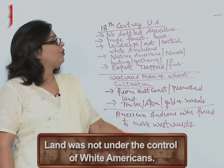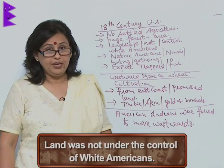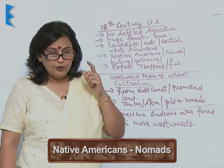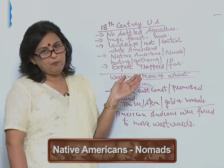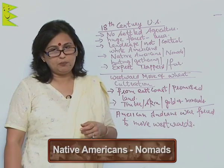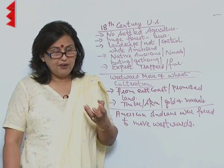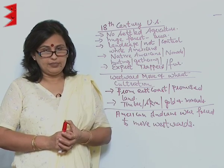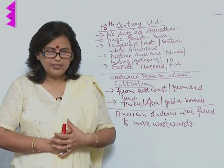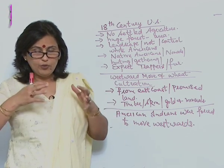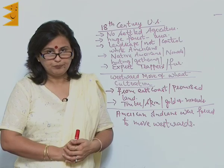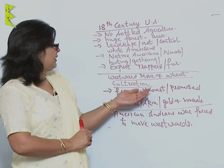The land was not under the control of white Americans. The Native Americans were generally nomads who kept on moving from one place to another — hunting, gathering, and some of them were expert trappers who would collect animals. So there was no settled agriculture.